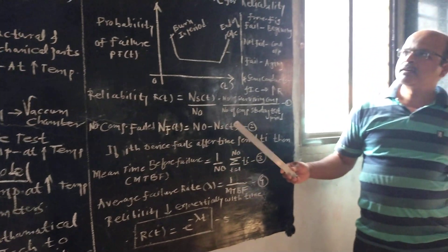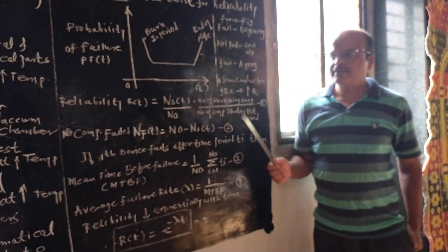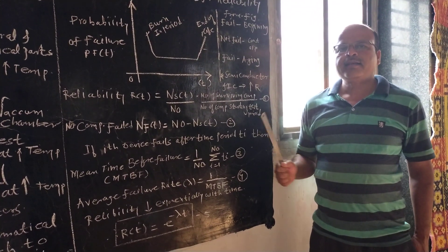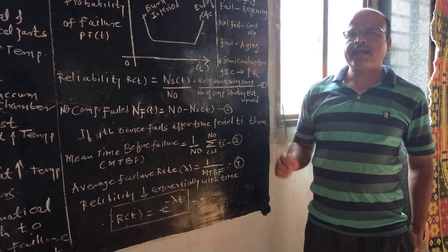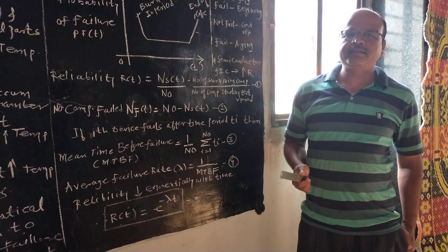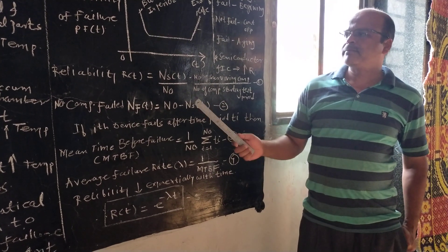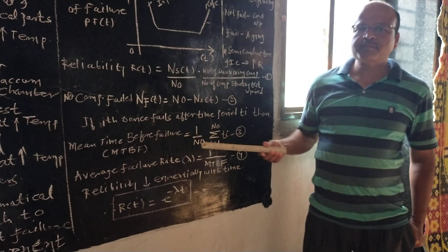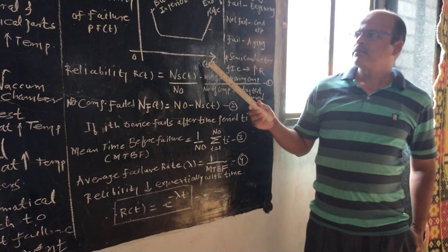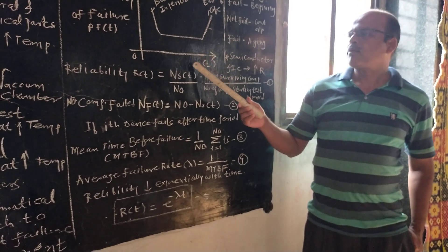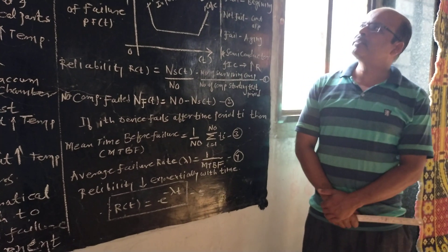In summary, when different components are used in a satellite, they are tested under drastic conditions — in a vacuum chamber and at very high temperature. If found suitable, those components are used in the satellite. The bathtub curve is used to observe the operation of all these components. This concludes the lecture on equipment reliability and space qualification.